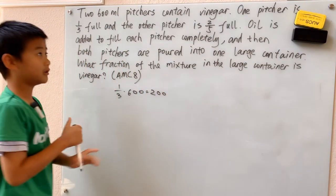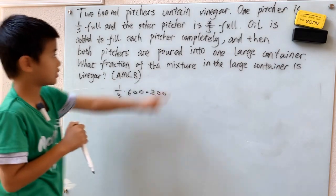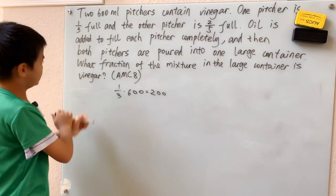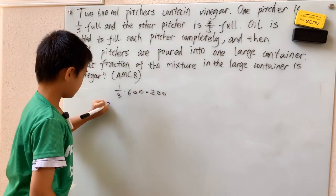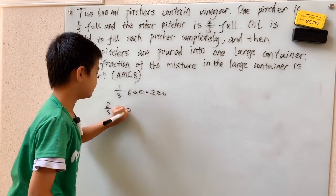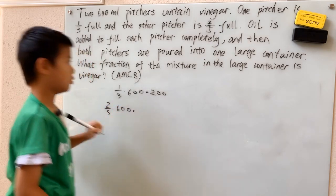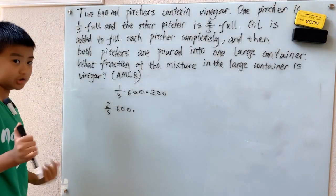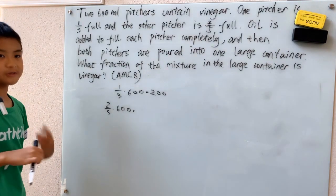So there's 200 milliliters of vinegar to start in the first pitcher. And two-fifths of 600, well one-fifth of 600 is 120. Two-fifths must be 240.